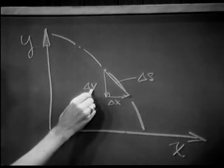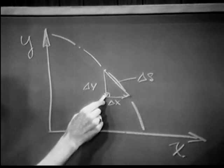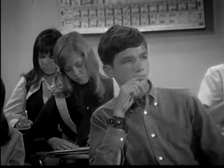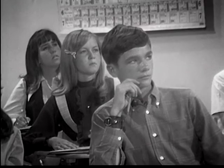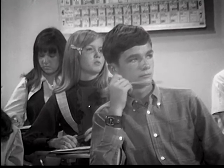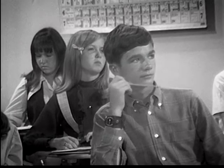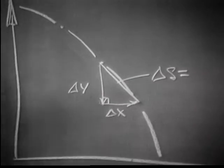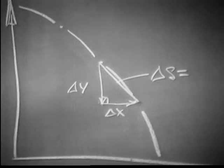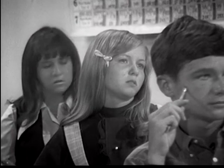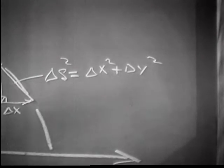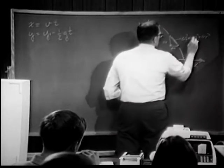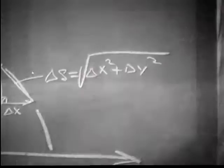If we have equations that calculate x and y for us, we can calculate the difference in x and the difference in y. If we know those, how do we find the distance of the hypotenuse of that triangle? Joy, what can we do? Use the Pythagorean theorem. What's the Pythagorean theorem? Delta-x squared plus delta-y squared equals delta-s squared. But we don't really want delta-s squared — what do we do? Take the square root of both sides. So we could take the square root.